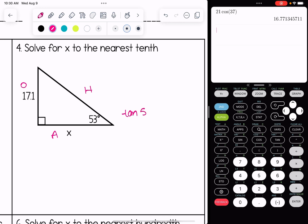So tangent of 53 equals the opposite over the adjacent. Cross multiply. Then we are going to divide by tangent 53 because we have to get x by itself. Keep in mind, anytime x is in the denominator, you will have to do that extra step.